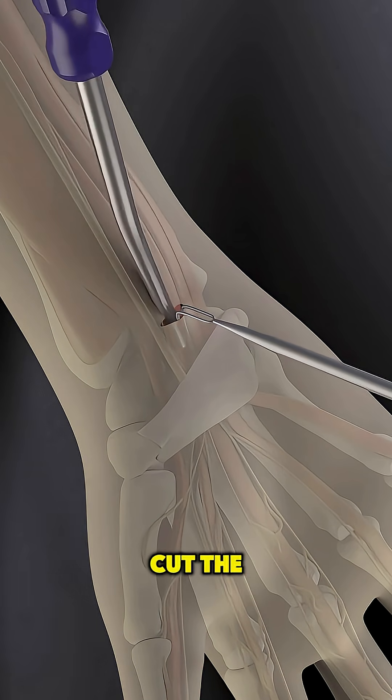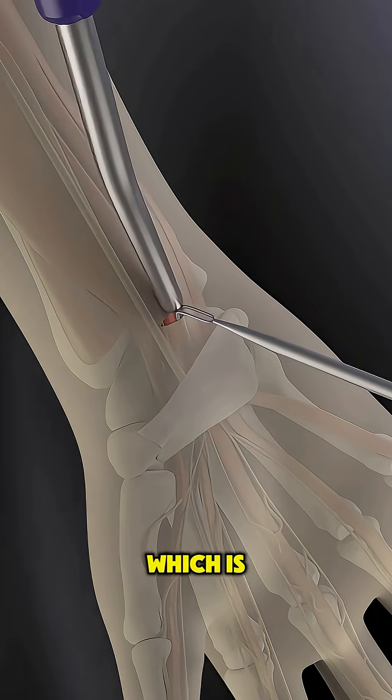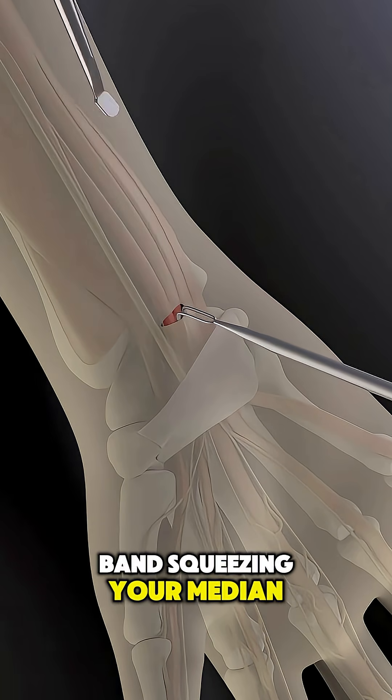The goal is simple. Cut the transverse carpal ligament, which is the tight band squeezing your median nerve.